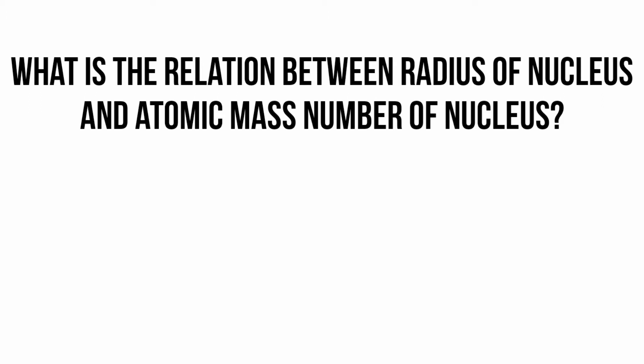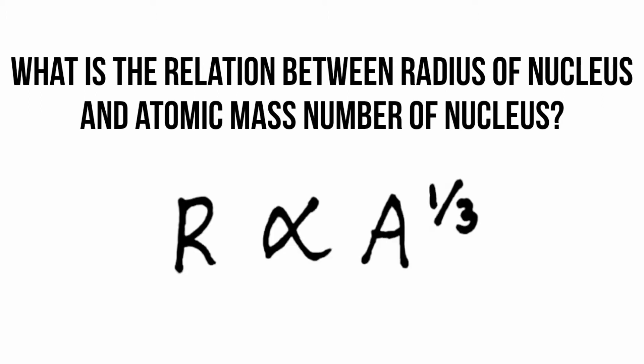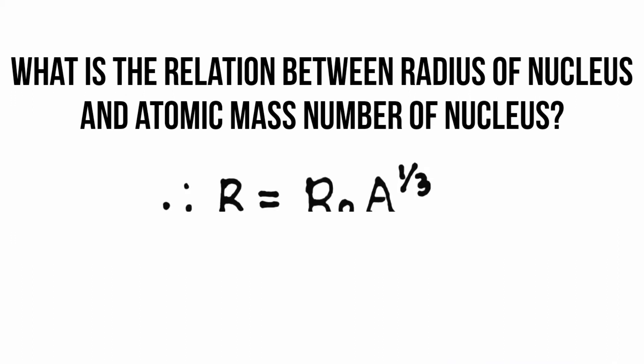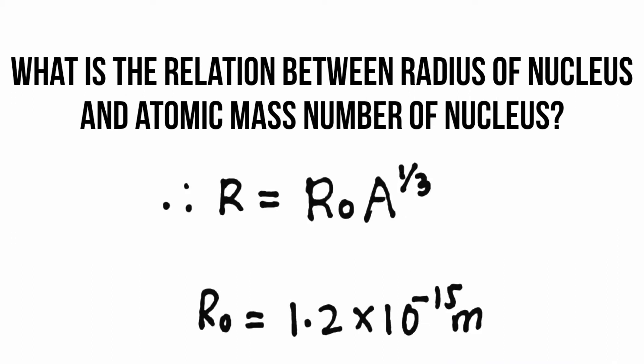What is the relation between the radius of the nucleus and the atomic mass number? R is directly proportional to A^(1/3). Removing the proportionality, the equation becomes R = R₀ · A^(1/3), where R₀ has a value of 1.2 × 10⁻¹⁵ meters.